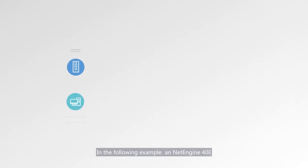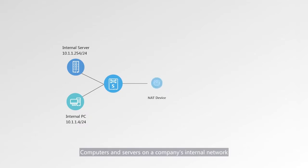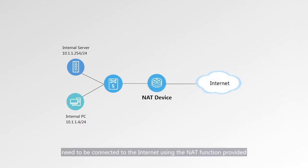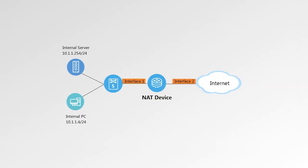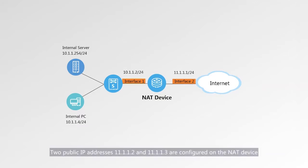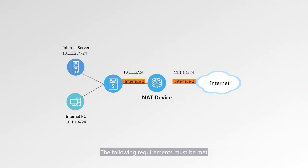In the following example, a NetEngine 40E is used to describe the networking. Computers, servers, and a company's internal network need to be connected to the internet using the NAT function provided by the NetEngine 40E functioning as a NAT device. Interface 1 of the NAT device is connected to the internet and interface 2 is connected to the intranet. Two public IP addresses, 11.1.1.2 and 11.1.1.3, are configured on the NAT device.